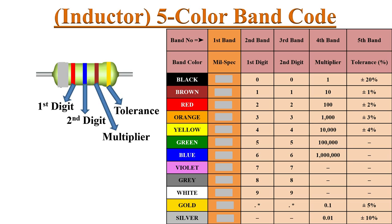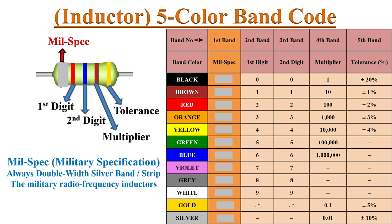If there are five color bands printed on an inductor, the first color band is always a double-width silver band, which identifies military radio frequency inductors. The second and third color bands represent the number values, the fourth band is the multiplier, and the fifth band indicates tolerance in percentage.